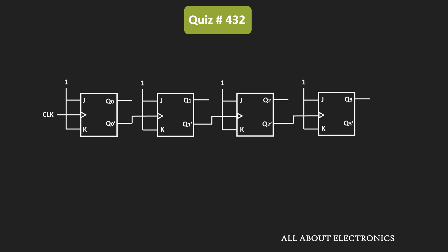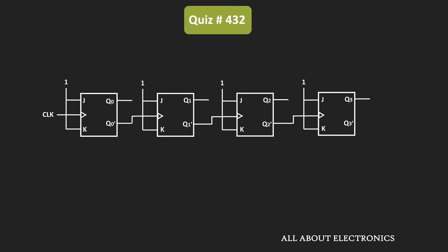First, let us see counter A. If you closely observe, this is basically a 4-bit ripple counter, because the output of one flip-flop is connected to the clock input of the next stage. To be precise, it is a 4-bit up counter. In the case of the ripple counter, since the output of one flip-flop is connected to the clock input of the next stage, as we move from the LSB to the MSB side, the propagation delay of each flip-flop will get added.